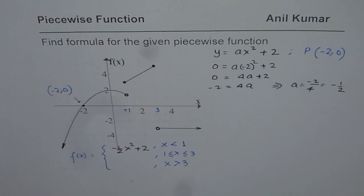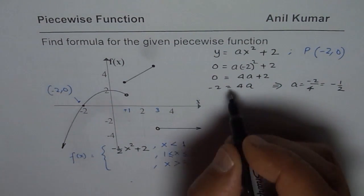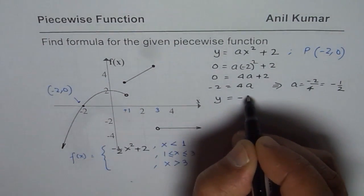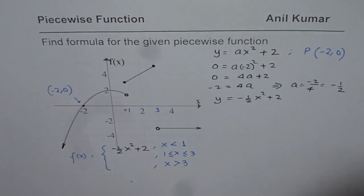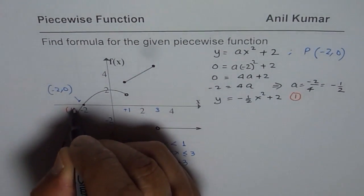I hope that is absolutely clear. So we could summarize this as y equals to minus half x square plus 2 and that is our piece number 1. So this is the piece number 1.